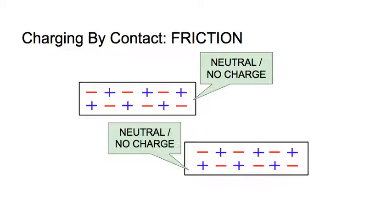The first one is called charging by contact, and by contact we mean that these two materials will actually come into contact with each other—they will touch. You'll notice that both of them start off as neutral, meaning they have no net charge; they both have equal amounts of positive and negative charges.